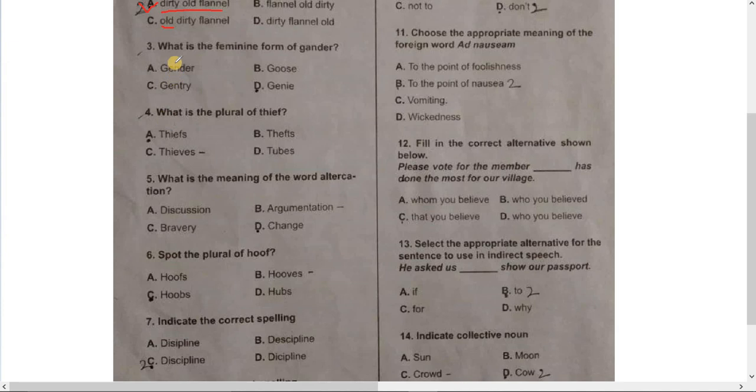Number 3. What is the feminine form of gender? Gander. It means gender like gender, male gender is the female gender. This is a male gender, so it is male gender and female gender. Feminine gender is the female gender.